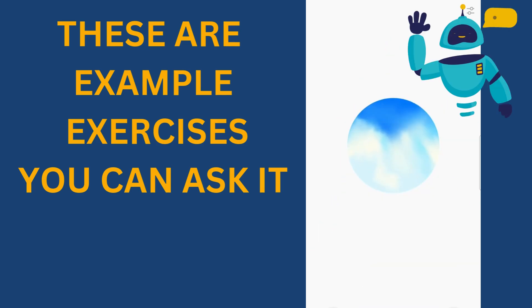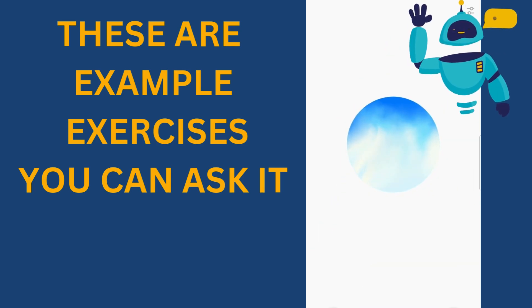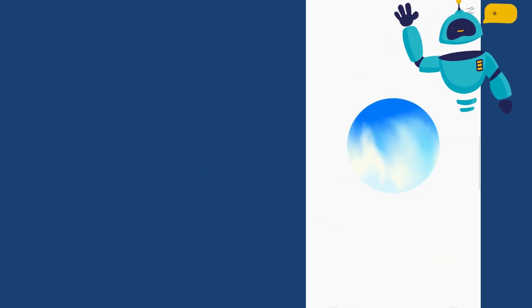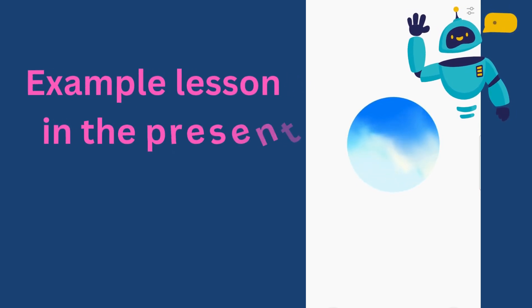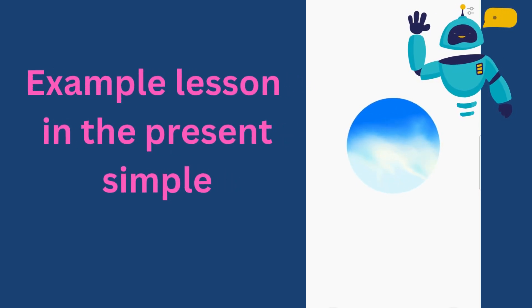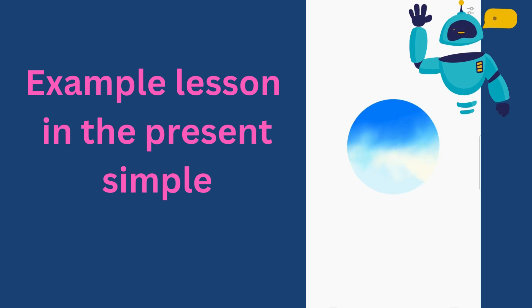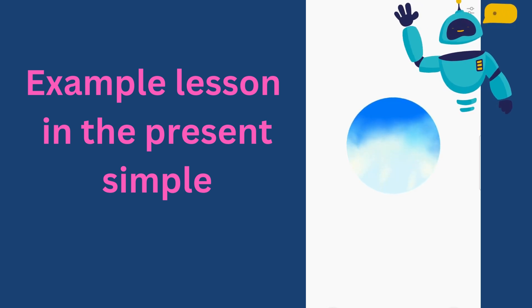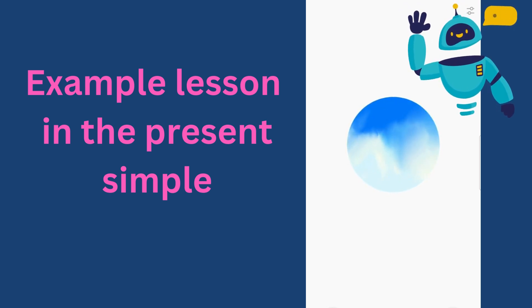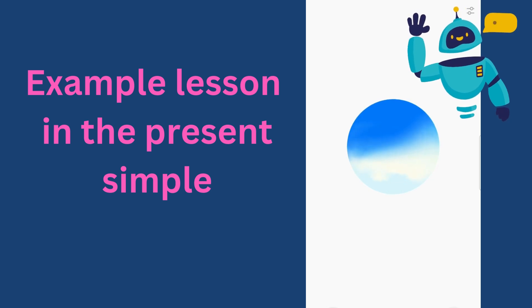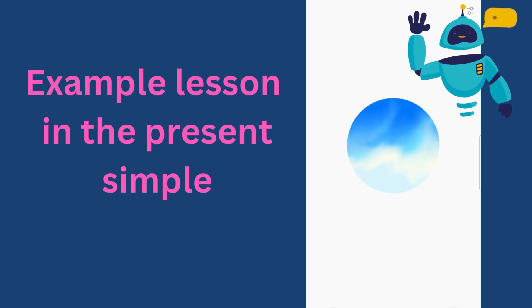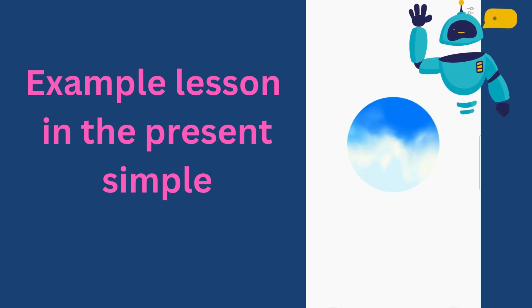The structure is straightforward. For most subjects — I, you, we, they — use the base form of the verb. For third-person singular subjects — he, she, it — add S or ES to the base form.